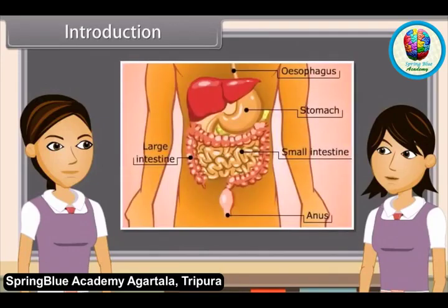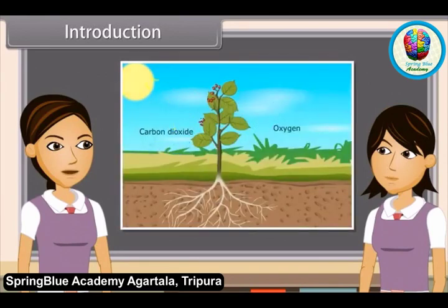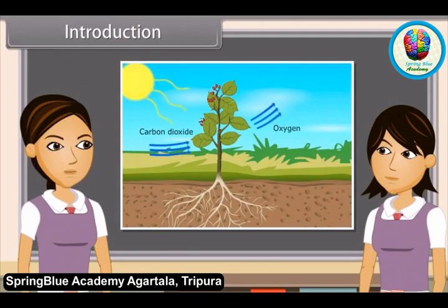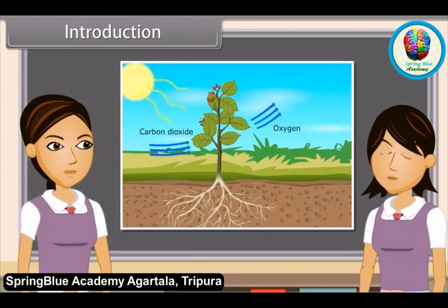We know that all organisms perform some basic functions to keep themselves alive. The basic functions performed by living organisms to maintain their life on this earth are called life processes. Since living organisms perform various functions to maintain their life, energy is required to perform these functions. They get this energy from outside the body in the form of food.